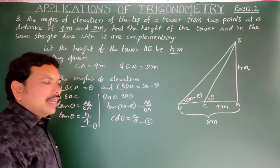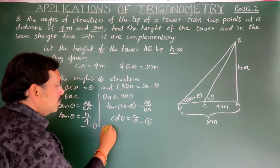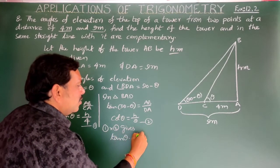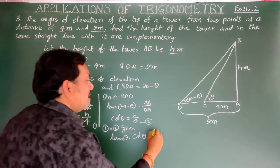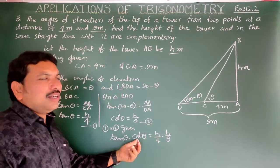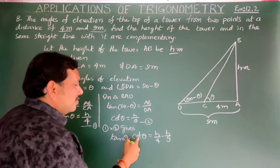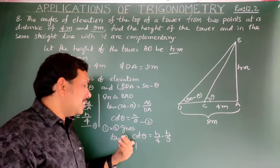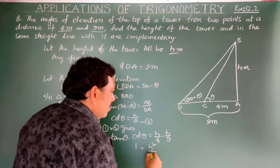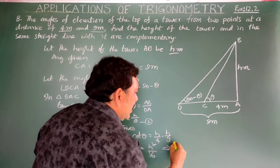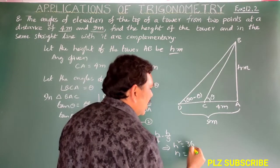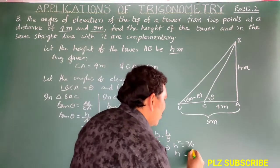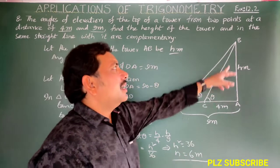Multiplying equation one and equation two: tan theta × cot theta = (h/4) × (h/9). Since tan theta and cot theta are reciprocals of each other, their product is 1. So 1 = h²/36, which gives h² = 36, and therefore h = plus or minus 6. Since we take only positive values for measurement, h = 6 meters.